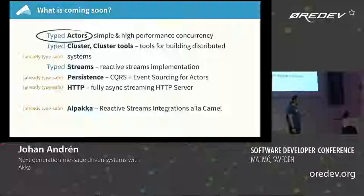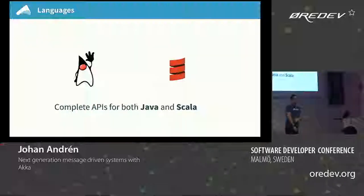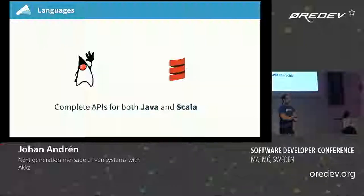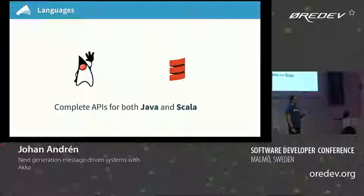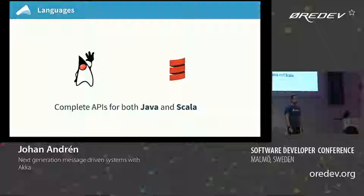So this is what we're going to cover today — typed actors, and also a bit of typed cluster and the cluster tools. The library itself is written in Scala, and in the Akka team we really like Scala. But for every API we have, we also have a Java one. We do work hard to have a full Java-native experience with actors. In this talk I'm going to do all the samples in Java, but I'll also quickly show them in Scala.